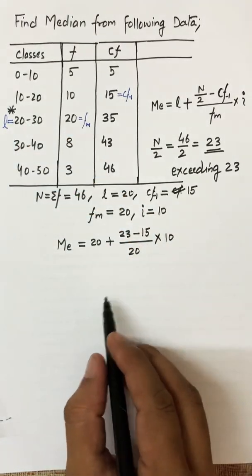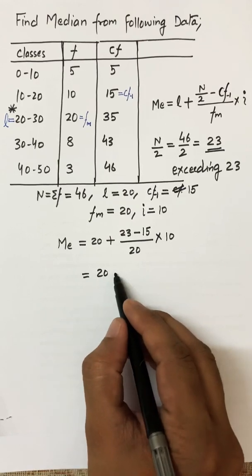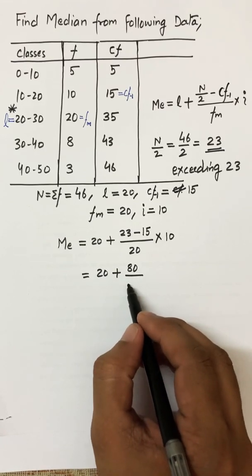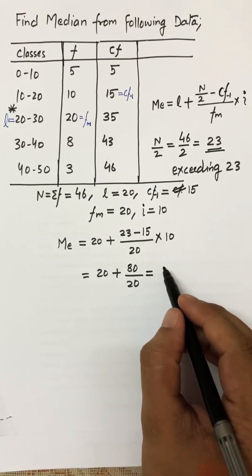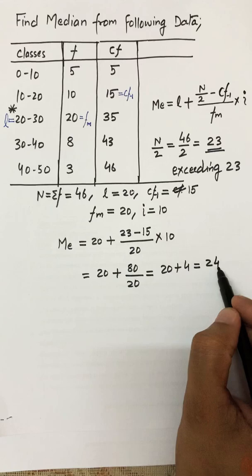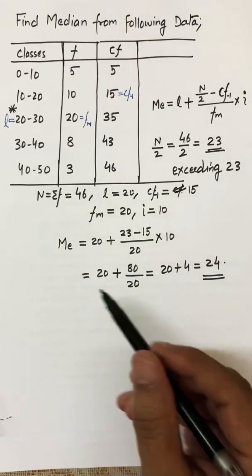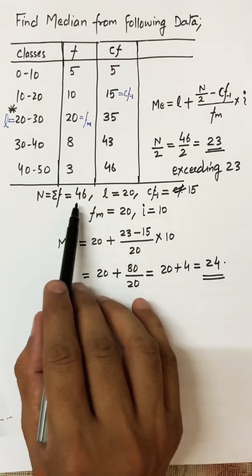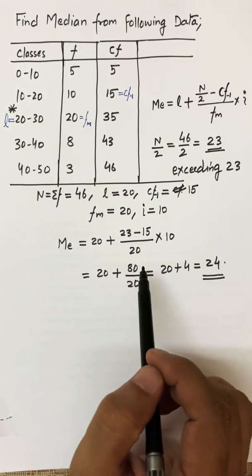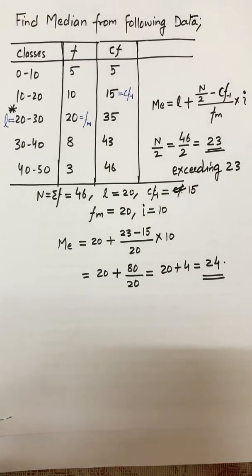After calculation: 20 plus 8 divided by 20, multiplied by 10, gives 20 plus 80 divided by 20, which gives a median value of 24. This means that half of the 46 total observations are below 24 and half are above 24. This is how you calculate the median for continuous frequency classes. Thank you.